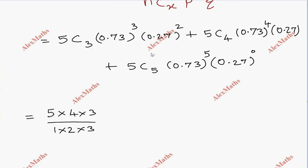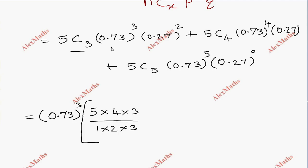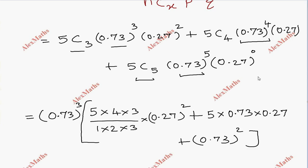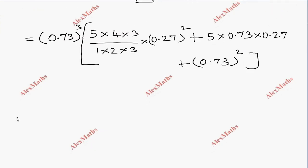Here, 0.73 to the power 3 is common, which makes the calculation easier. So we factor out 0.73 to the power 3. We get 0.73 to the power 3 times the quantity: 10 times 0.27 squared, plus 5 times 0.73 times 0.27, plus 0.73 squared. The last term, anything to the power 0, equals 1.